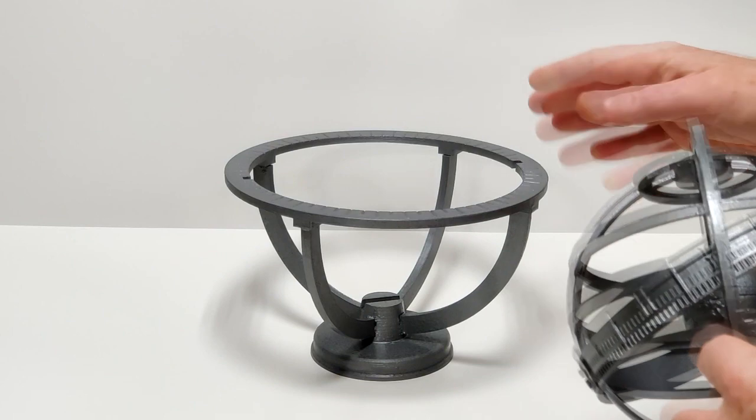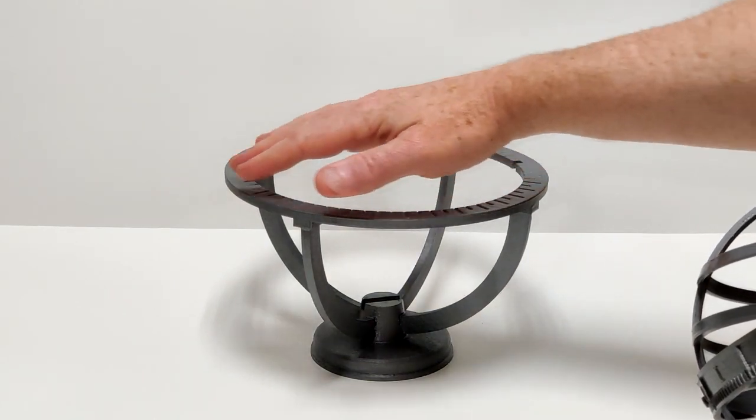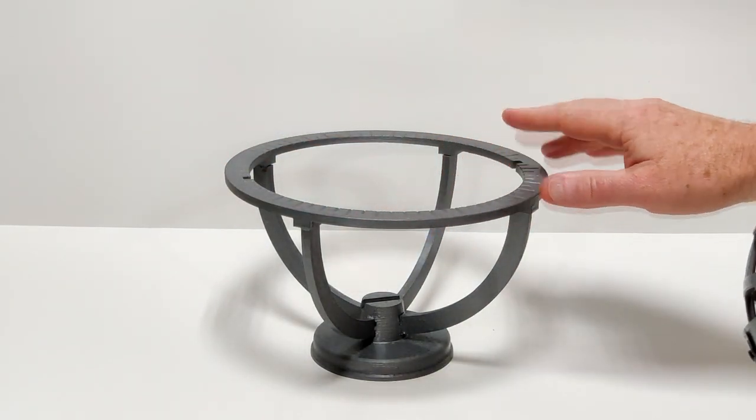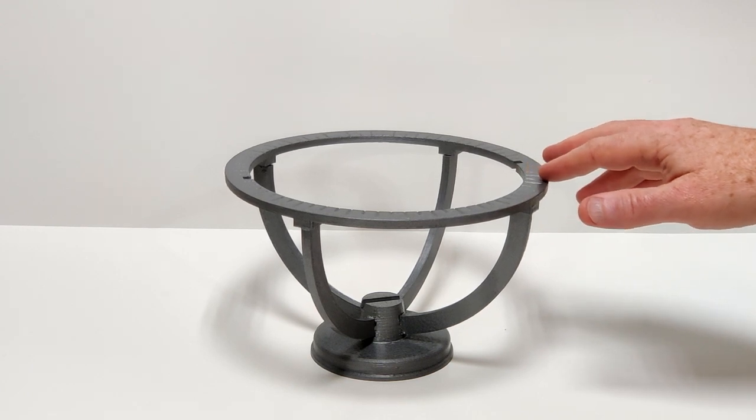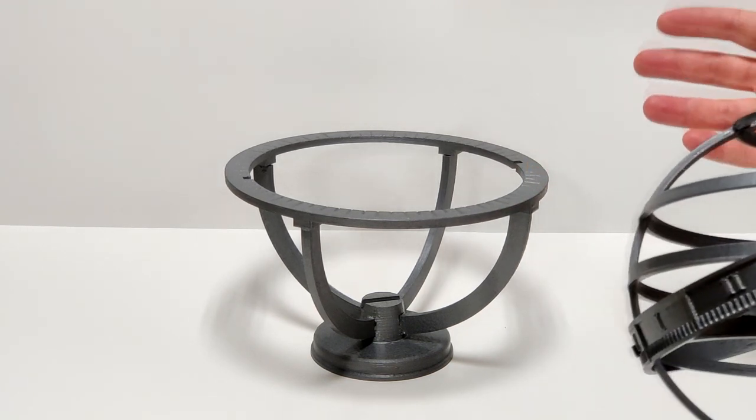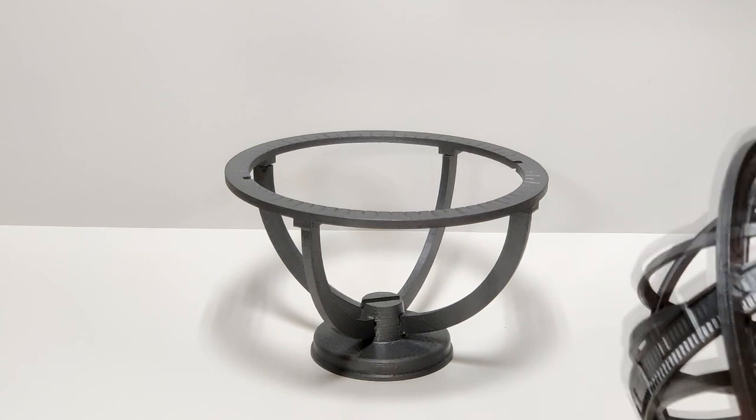The armillary sphere consists of a base with a horizon on it meant to indicate the visible horizon, what could be seen in the sky from the position on earth where this is set to.